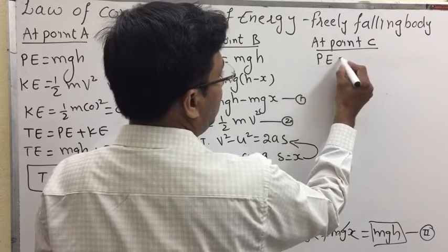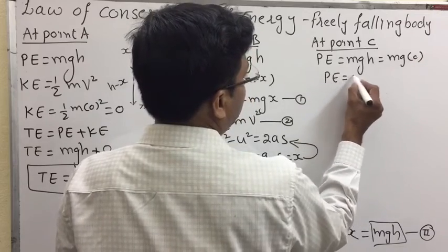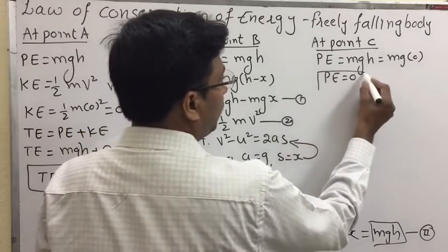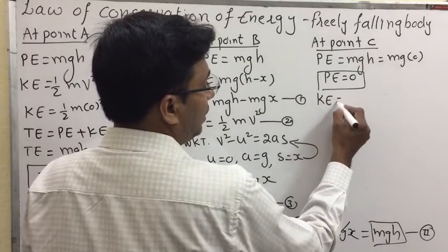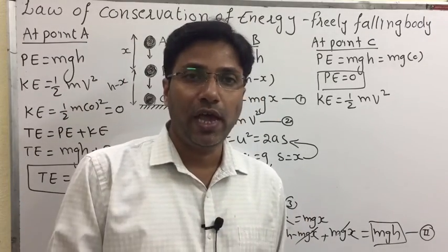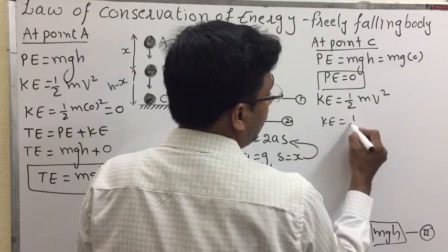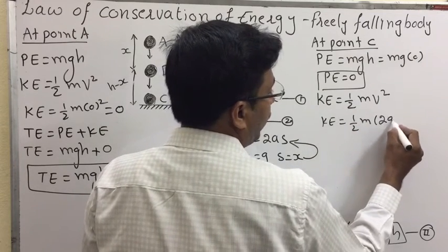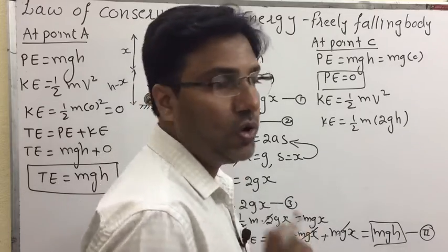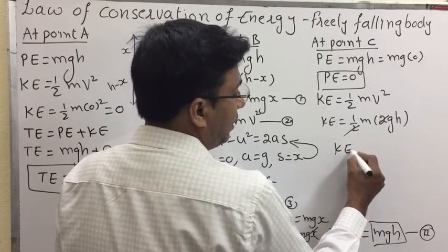At point C, the potential energy formula is mgh, but the height is zero, so potential energy at point C is zero. For kinetic energy at point C, we use the formula half mv squared. For a freely falling object reaching the ground, v squared equals 2gh. Therefore, kinetic energy equals half m times 2gh, and the 2s cancel, giving kinetic energy equals mgh.